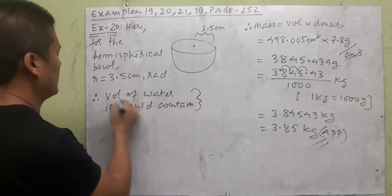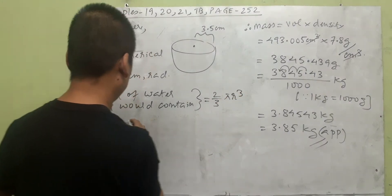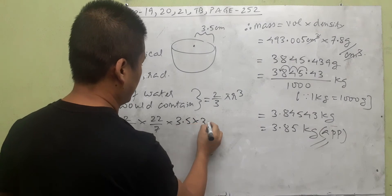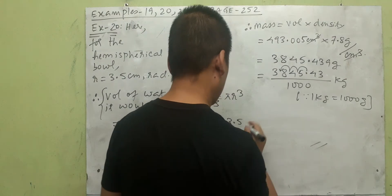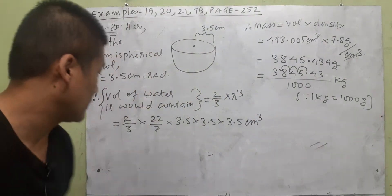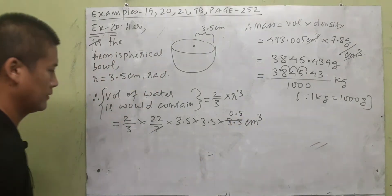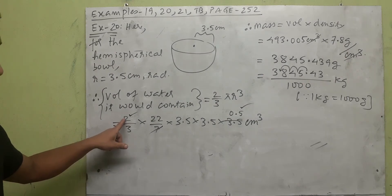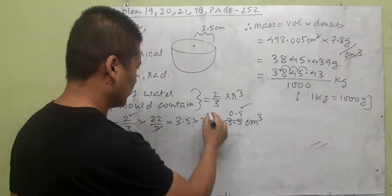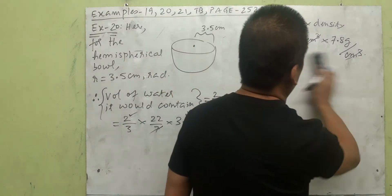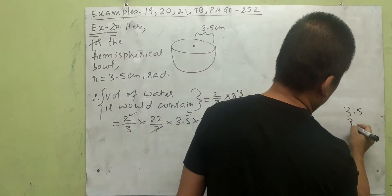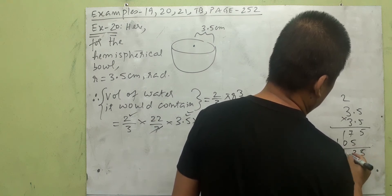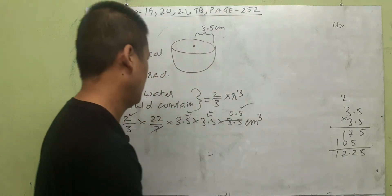The volume of water the hemispherical bowl can contain equals the volume of the hemisphere: 2/3 π r³. Substituting: 2/3 × 22/7 × 3.5 × 3.5 × 3.5 cm³. Notice that 0.5 multiplied by 2 gives 1, so the 2 in the numerator and the 0.5 from 3.5 simplify. First, 3.5 × 3.5 = 12.25.